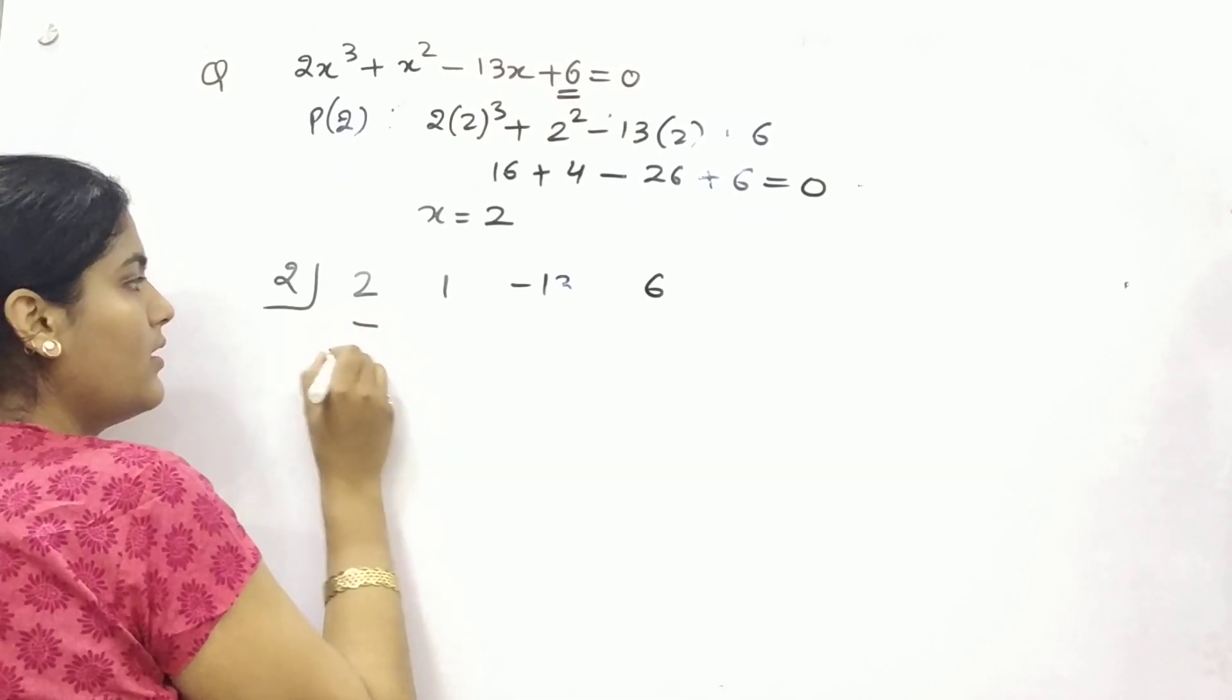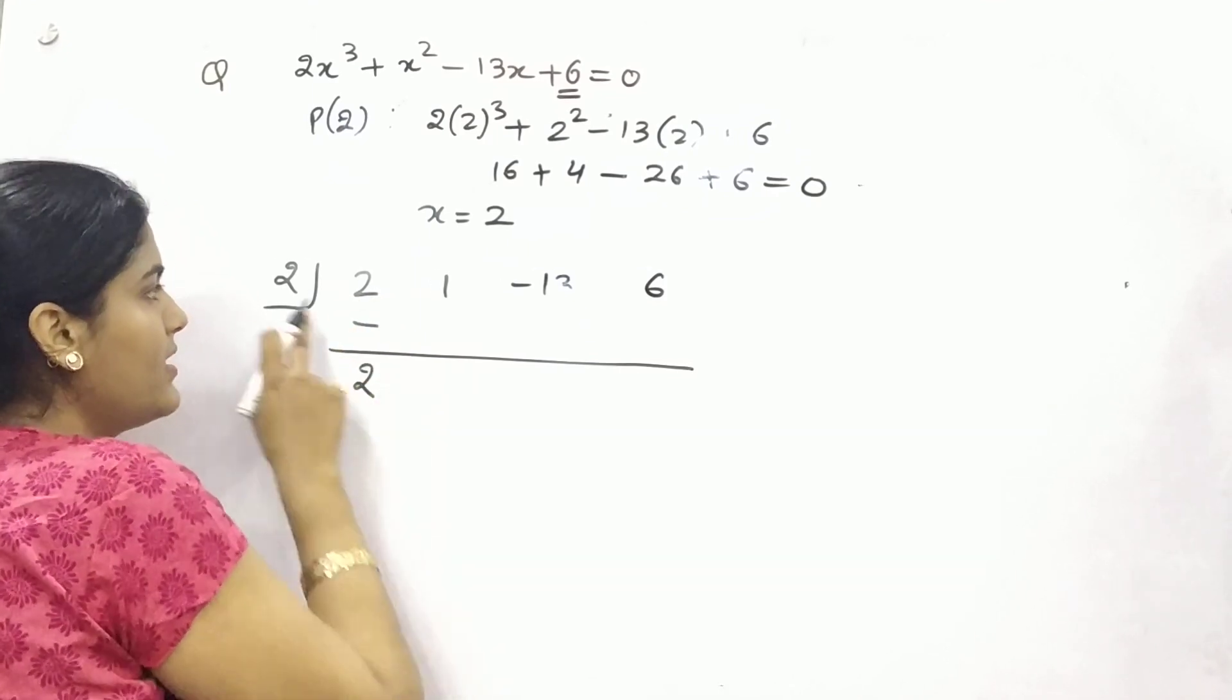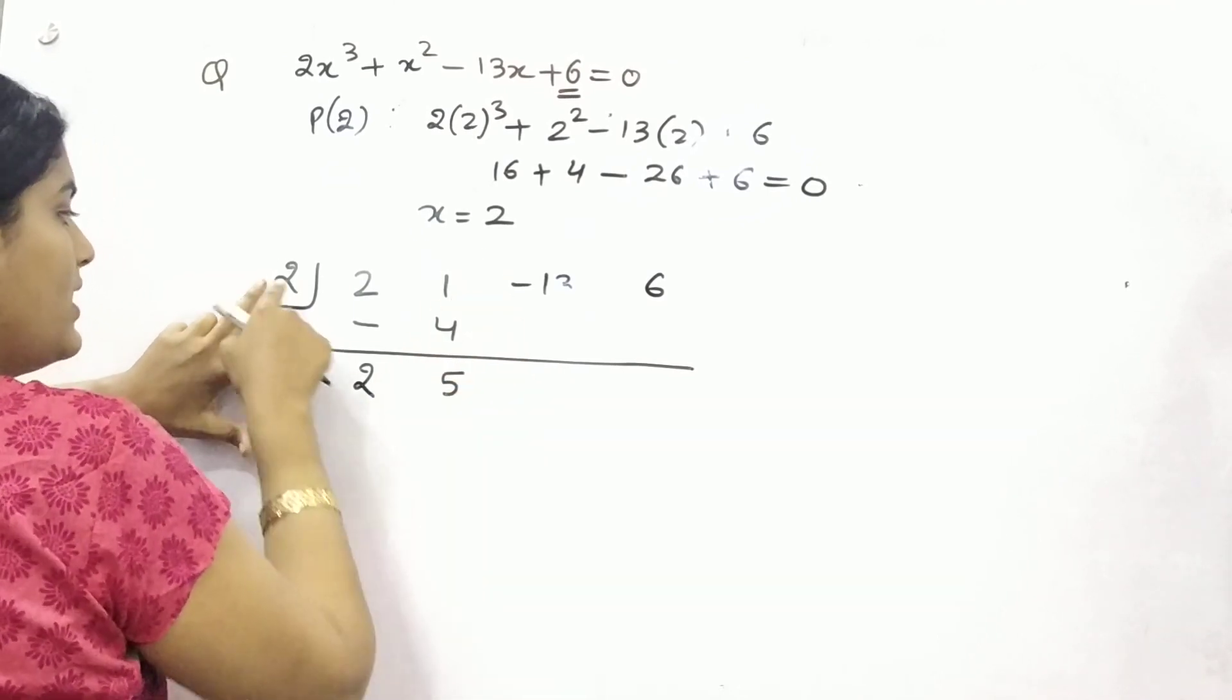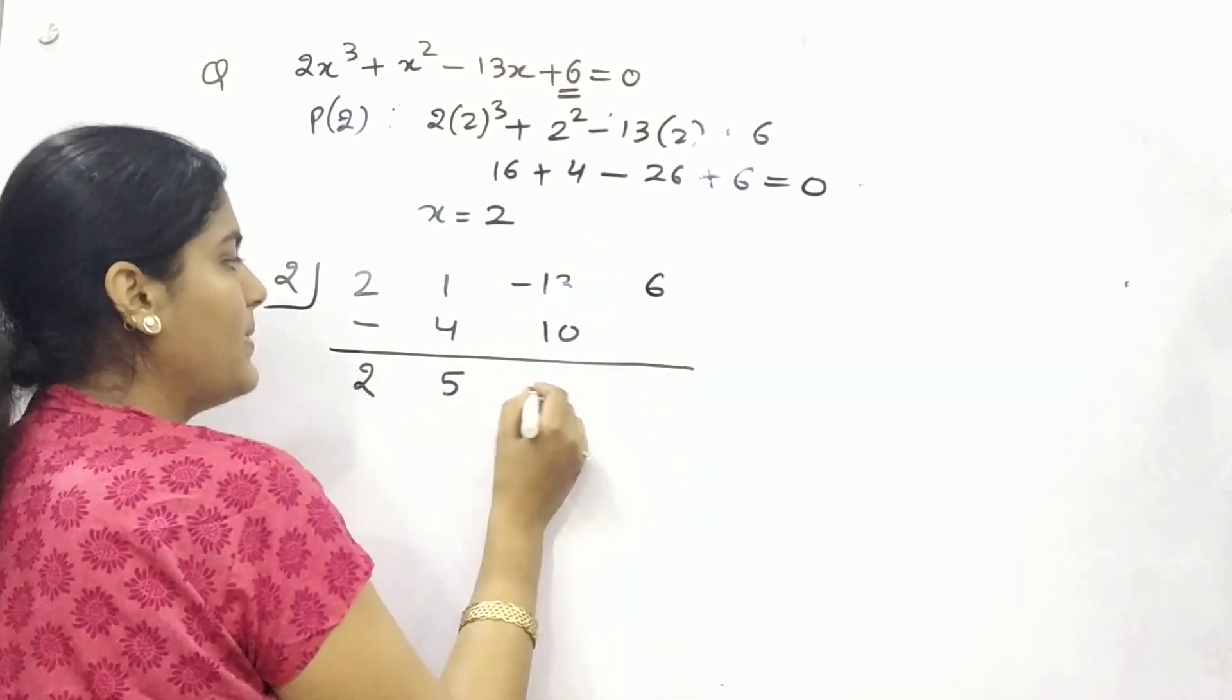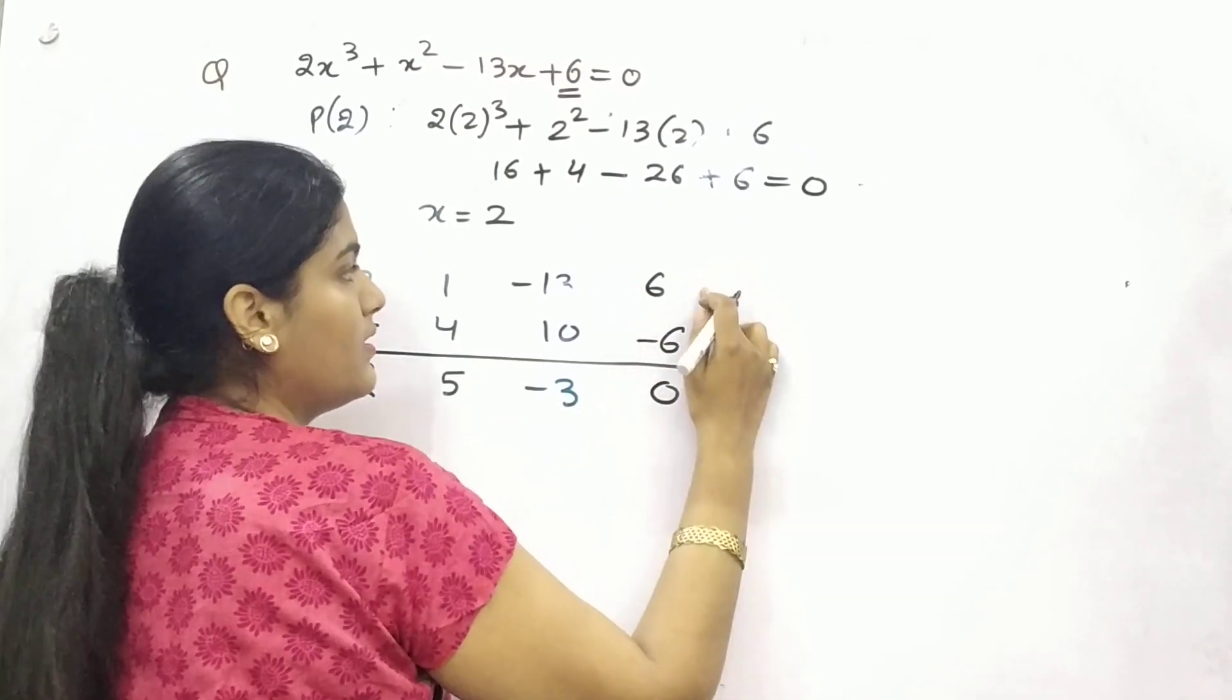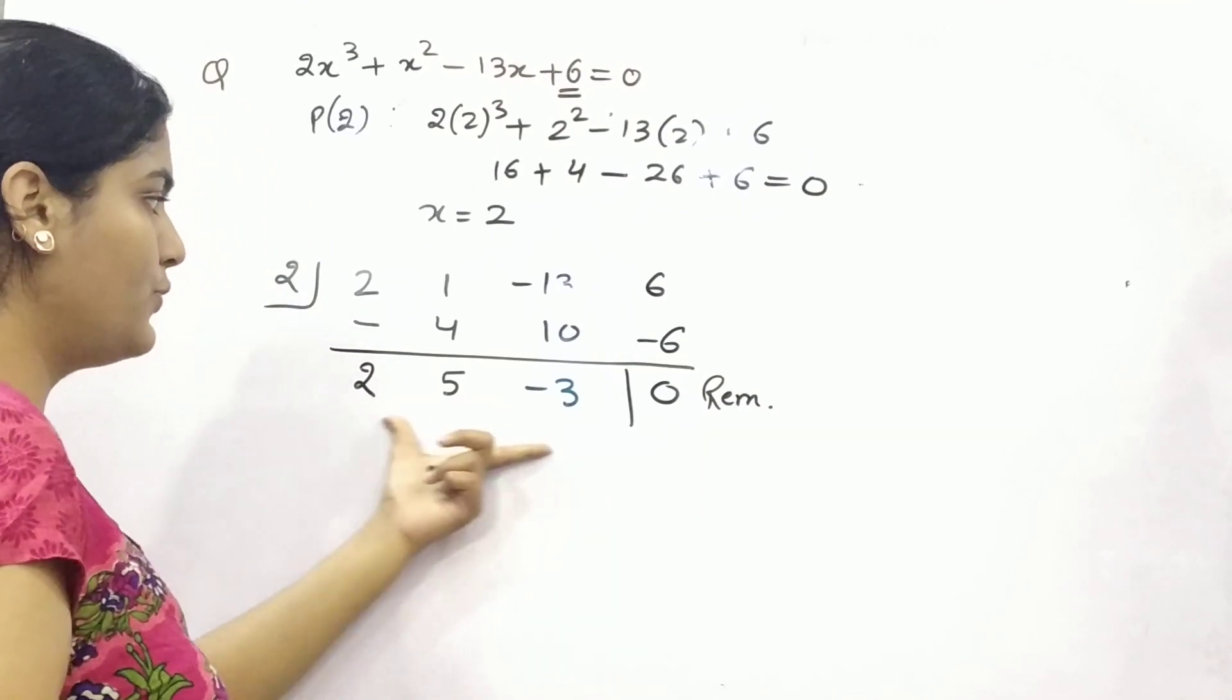Thereafter, what you need to do? First number, there should not be written anything here. So 2. Thereafter you need to multiply this with this. So 2 times 2 is 4. Now add these to 5. Again, 2 times 5 is 10. Add these to minus 3. 2 times minus 3 is minus 6. Add these to 0. This is your constant. So this number is your remainder, which is 0.